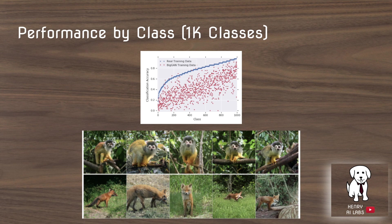This plot shows performance broken down by class, since accuracy varies across the 1,000 ImageNet classes. Images of Squirrel Monkey and Fox are two examples of classes that actually perform better with BigGAN-generated data than real ImageNet data — but only by a marginal improvement, while some other classes are completely tanked by this method.